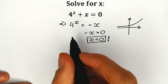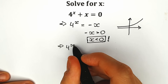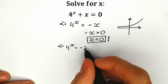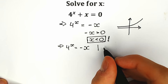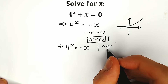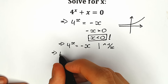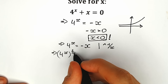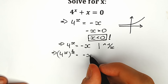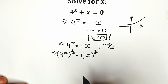Let's rewrite: 4 to the x equals minus x. Now let's do some tricks. I suggest raising both sides to the power 1 over x. As a result we have 4 to the x, all raised to the power 1 over x, equal to minus x to the power 1 over x. We just raised both sides to the power 1 over x — it changes nothing.